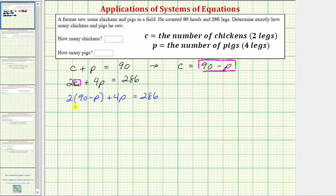Notice now we have an equation with one unknown. We now solve the equation for p. So for the next step, we'll clear the parentheses by distributing here. Two times 90 is 180. So 180 minus two times p, which is 2p, plus 4p equals 286.